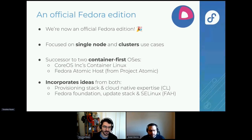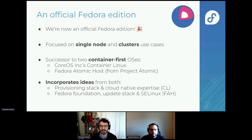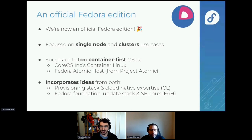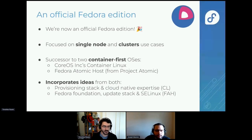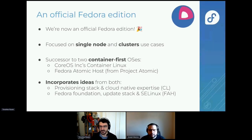Fedora CoreOS initially came as the successor to two container-first operating systems: the CoreOS Container Linux project and the Fedora Atomic Host project. It picked up the best ideas from both — the way we do provisioning and the cloud-native experience from the Container Linux side, and from the Fedora side: the foundations, packages, update stack, SELinux security policies and enforcement.